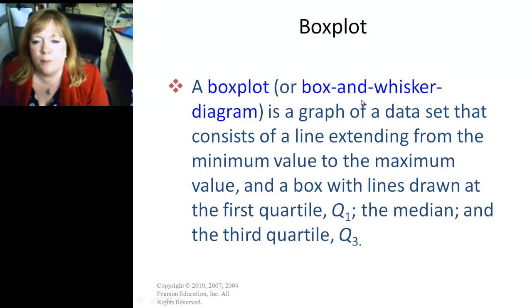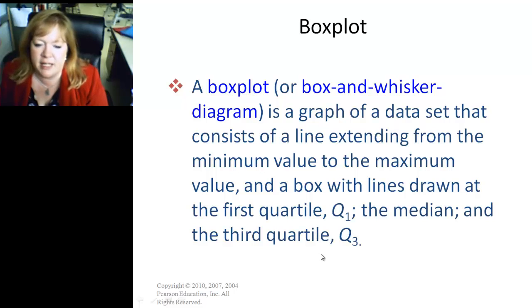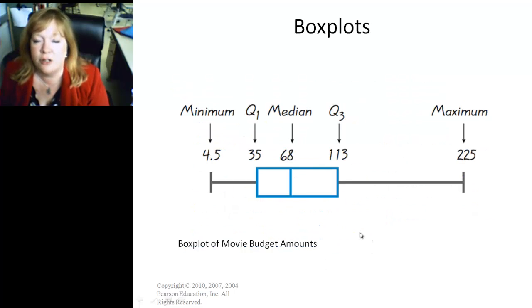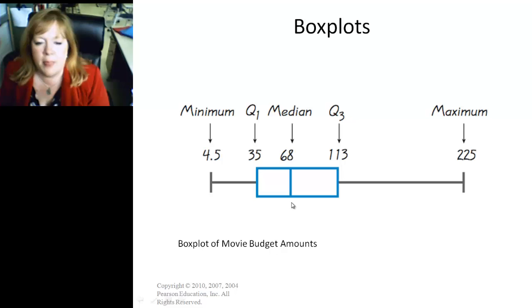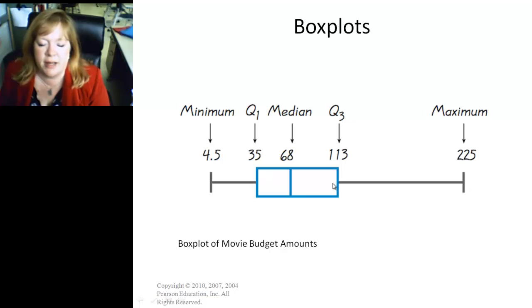So a box plot, or box-and-whisker diagram, is a graph of the data set that consists of a line extending from the minimum to the maximum value, and a box with lines drawn at the first quartile, the median, and the third quartile. By definition it looks kind of confusing, but here's what one looks like. They start with your minimum value — that's the far left — and the maximum, which gives you your range. Then they draw a vertical line at quartile 1, the median, and quartile 3. The edges of the box are formed by putting a box around between quartile 1 and quartile 3. When I draw these, I usually start with a dashed line, draw the box, and then erase the little dashed line inside the box.